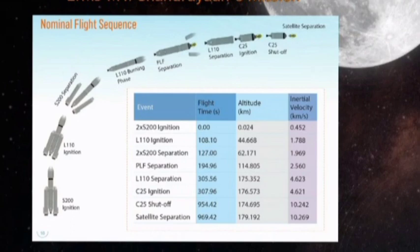The most awaited moment — Chandrayaan-3 separation — is scheduled to take place at 969.7 seconds into the flight. The altitude will be 179.3 km, which is part of an elliptical transfer orbit of 170 by 36,500 km. From then on, the spacecraft Chandrayaan-3 would commence its journey to the moon.